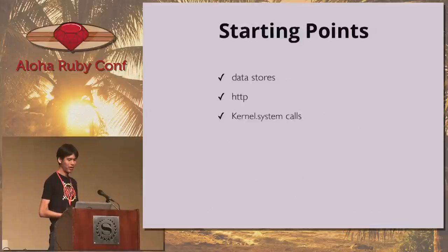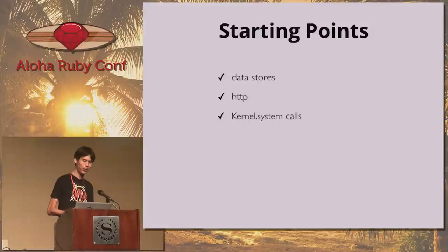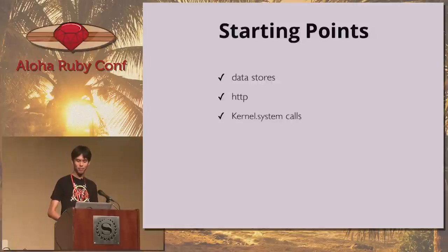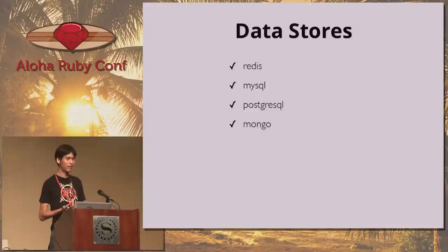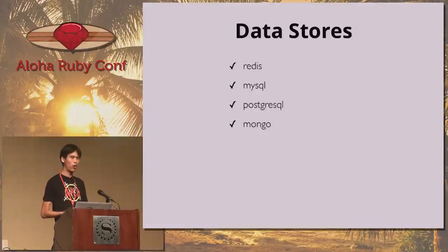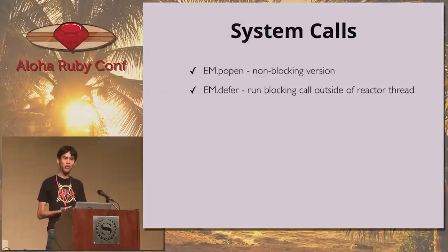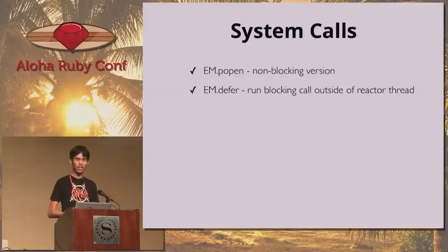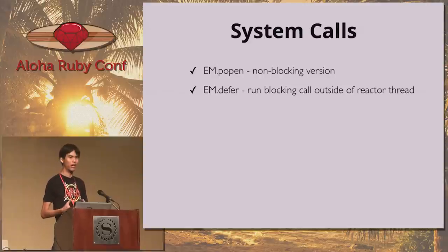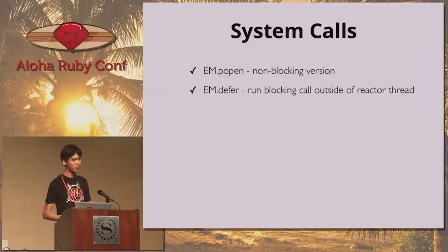Some starting points for unblocking your reactor: look at your data stores, external HTTP calls, and system calls. For data stores, a lot of drivers will either support EventMachine out of the box or have special adapters available. For HTTP, you can use Faraday — there's a built-in adapter. For system calls, EventMachine comes bundled with its own non-blocking version of kernel.popen. And if you really can't rewrite a chunk of code to be evented, you can call em.defer — this kicks off another thread, runs the block in that thread, and when it returns feeds the results back into your main reactor loop.